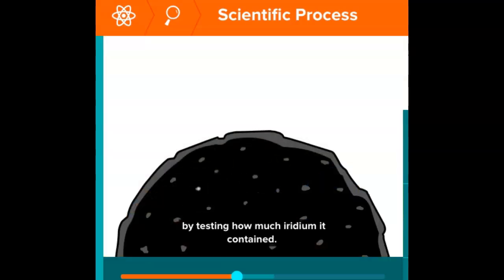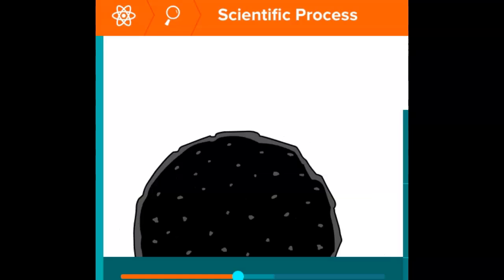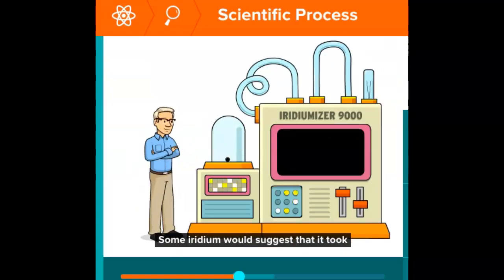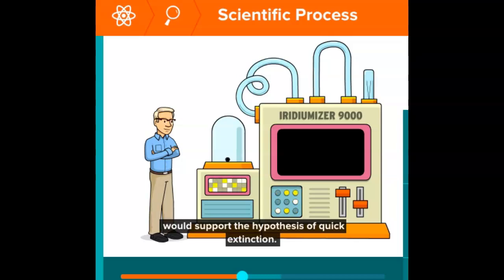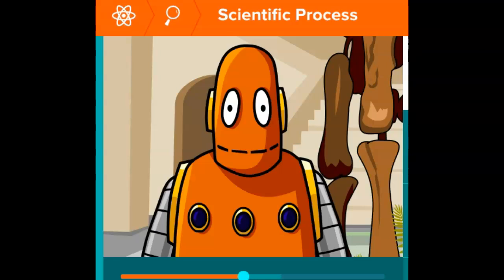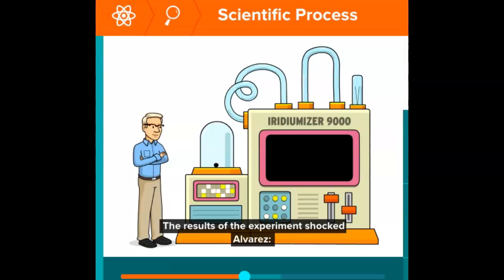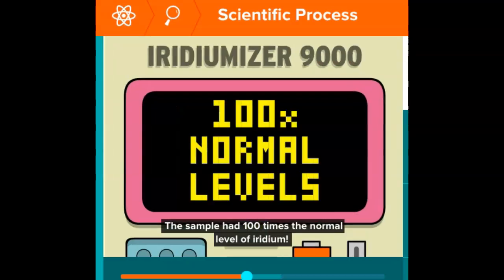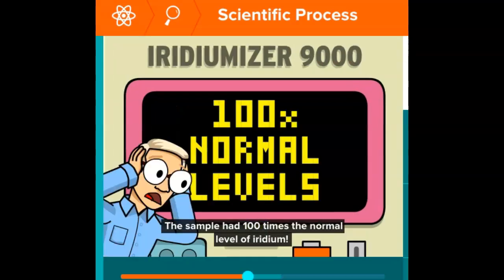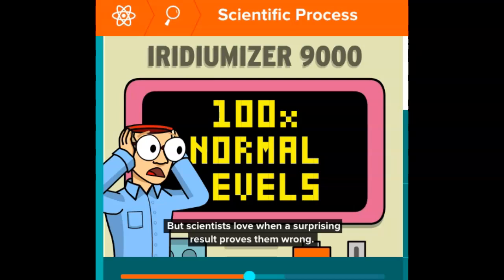Some iridium would suggest that it took some time for dinosaurs to die off, whereas little or no iridium would support the hypothesis of quick extinction. The result of the experiment shocked Alvarez. The sample had 100 times the normal level of iridium. But scientists love when a surprising result proves them wrong.